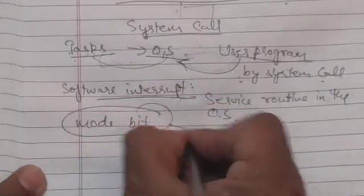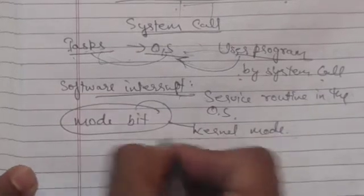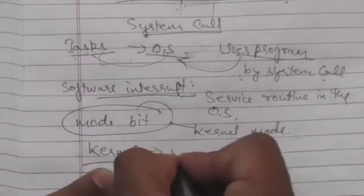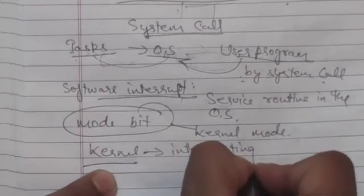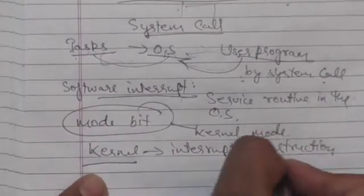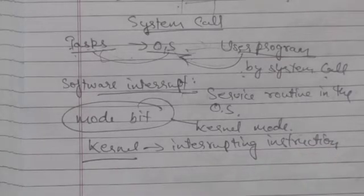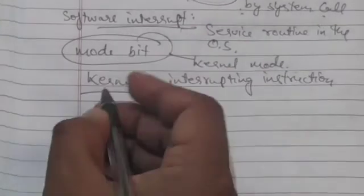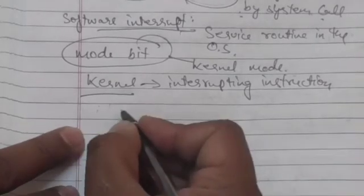Then the kernel examines the interrupting instruction to determine the type of system call and what type of service the user program is requesting. The kernel executes the request and returns the control to the instruction following the system call in the user program.